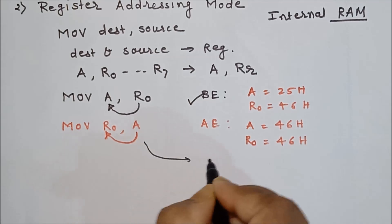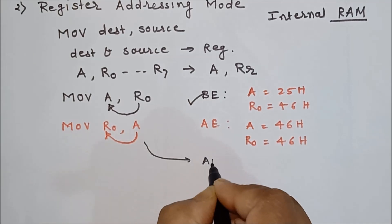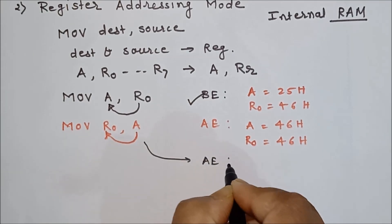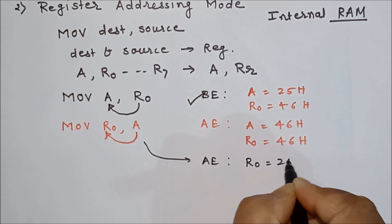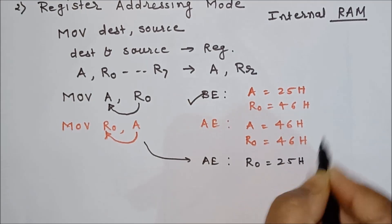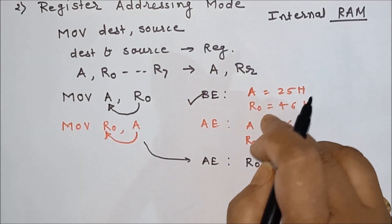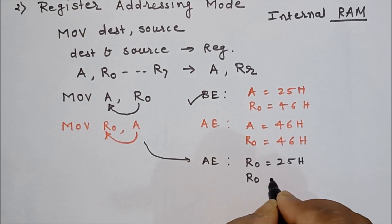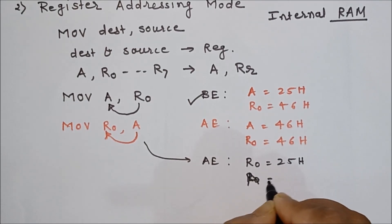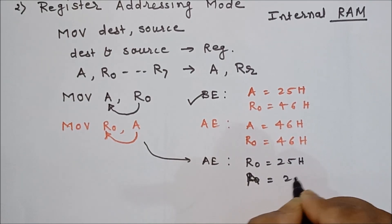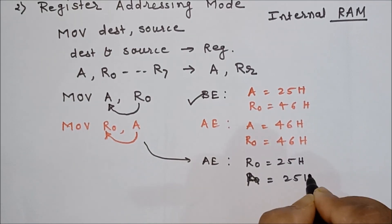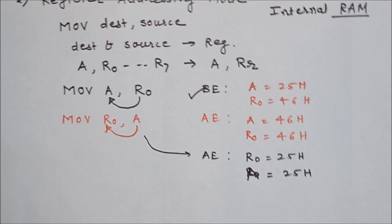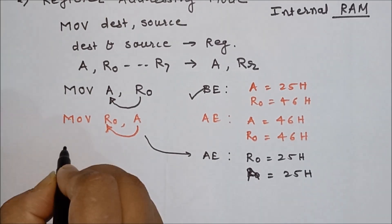Suppose before execution accumulator equals 25H and R0 equals 46H. Then after execution of MOV R0, A, you will get 25H in R0, and the accumulator data remains as it is at 25H.